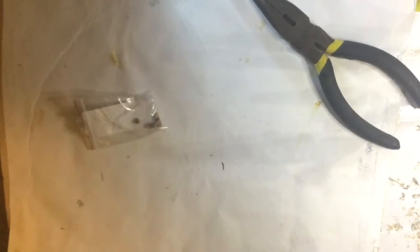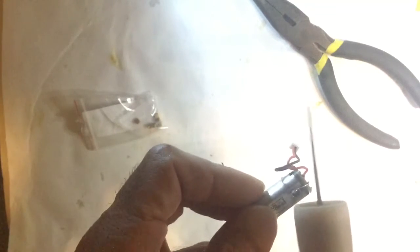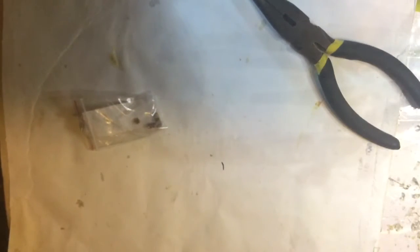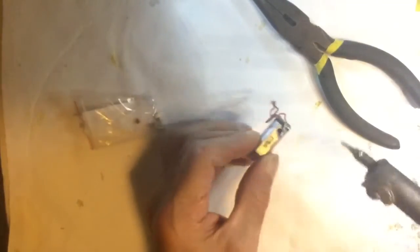We're going to sand the part - get something to sand it with. After that's sanded, I'm going to grab the soldering gun, put it in place, and solder it.